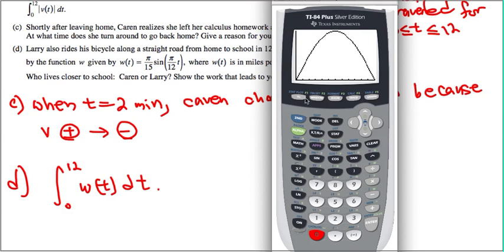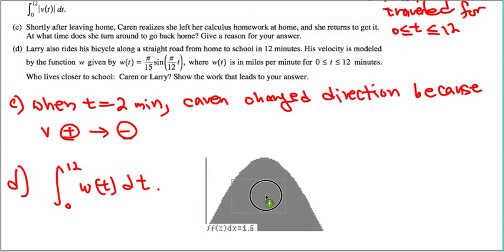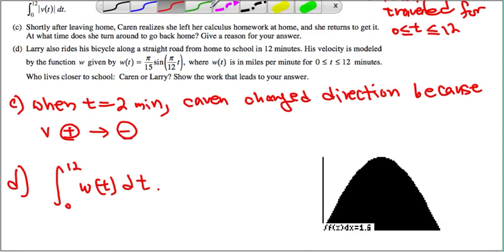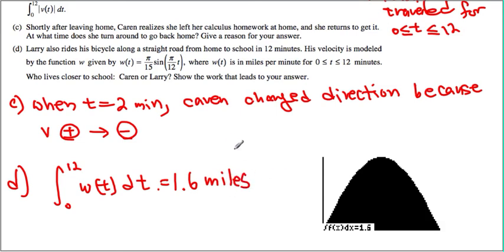Then it's going to give us a nice picture. All right. And then to find the area, we can go for second, trace, number 7, lower limit is equal to 0, and upper limit is 12. Then here it goes. So we realize that Larry lives 1.6 miles away from school.